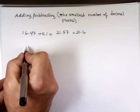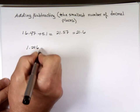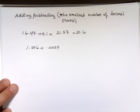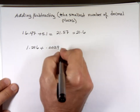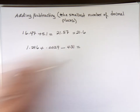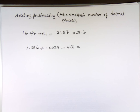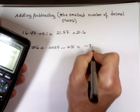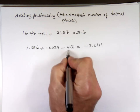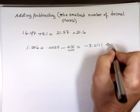So if I do this: 1.296 plus 0.0029 minus 0.0029. My number is negative 3.0111. Which number has the least number of decimal places? 4.31 has two decimal places. My answer should be negative 3.01.